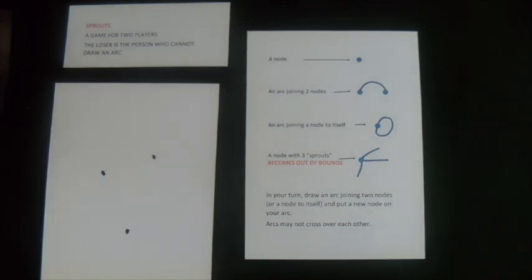Once a node has three Sprouts, or arcs, it becomes out of bounds. And I'll mark it in red. An arc must not cross another arc.